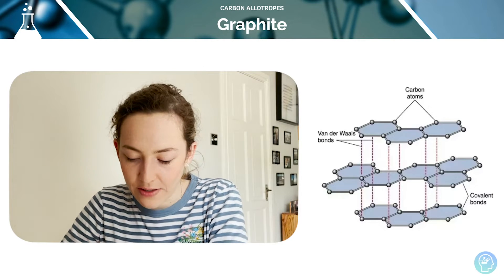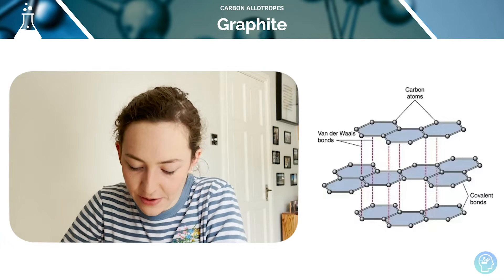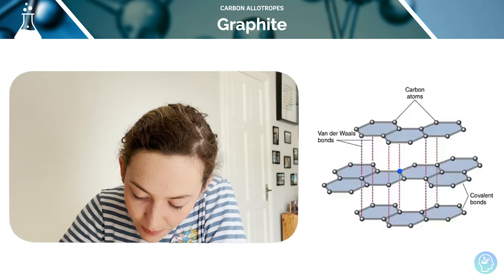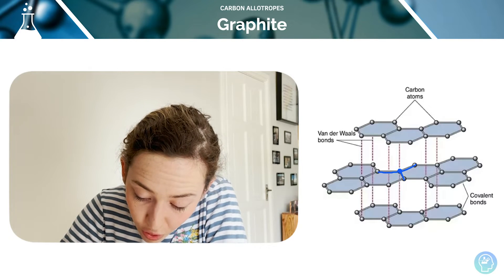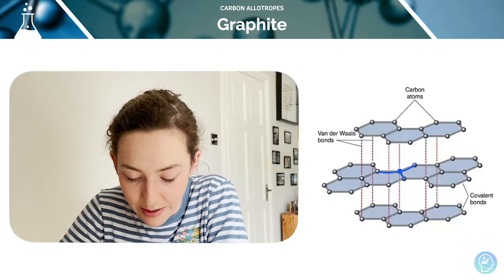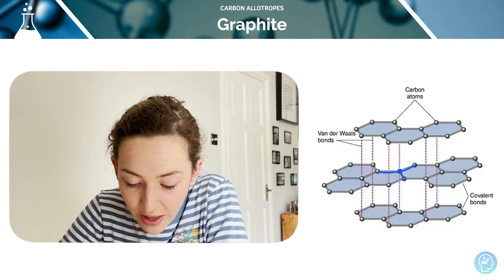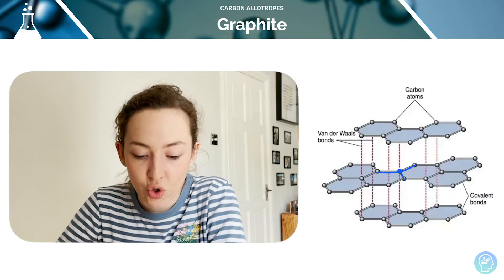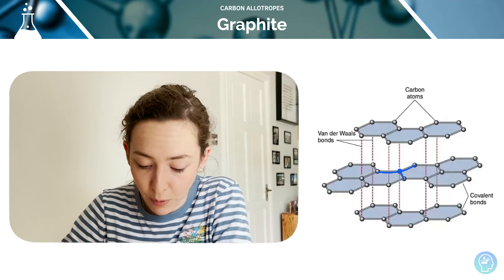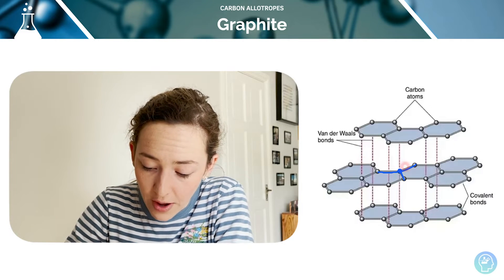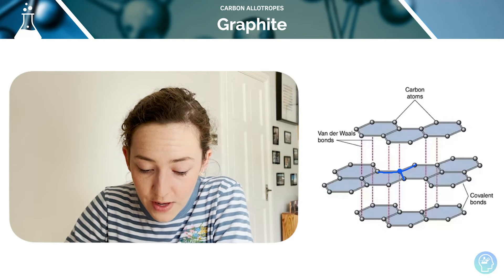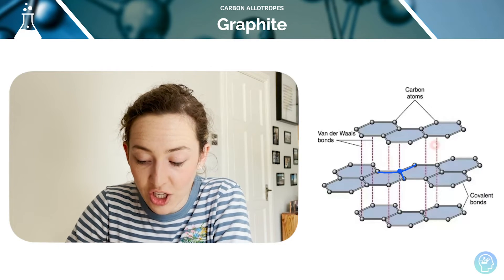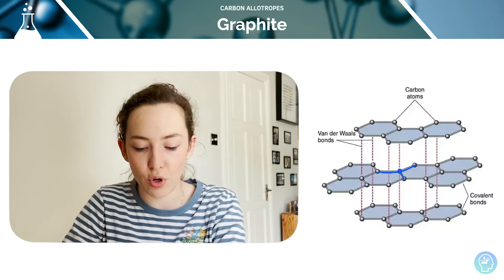Now let's look at graphite — it's a little bit different. If I take a carbon here, you can see it's got three, not four, but three covalent bonds instead, with three other atoms. And that leaves it with one outer electron that's not involved in the covalent bonding. This is where you find the outermost electrons — the fourth electron for each atom is delocalised and free to move around.